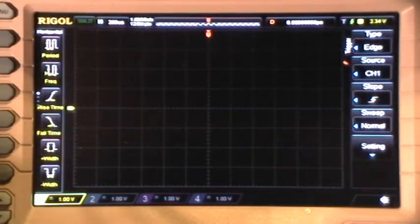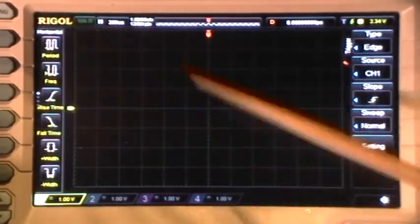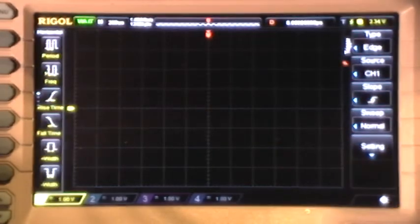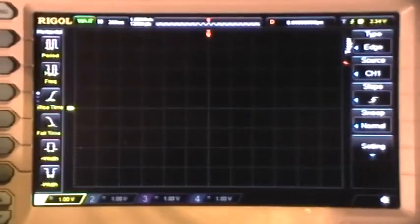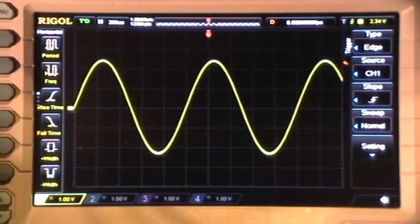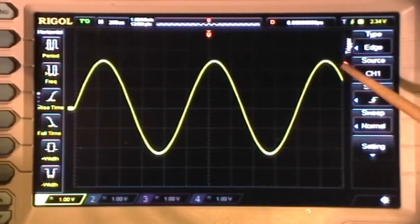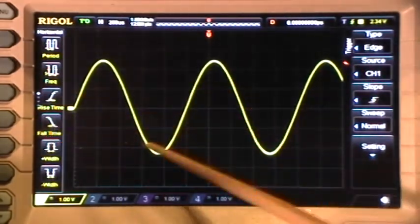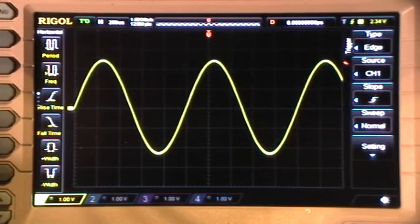If I go to the top row of buttons and push the clear button, now there's no trace. It's waiting for a trigger event. If I increase the amplitude of the input signal until it's above here where you have the trigger level set, now you get a trace on the screen.